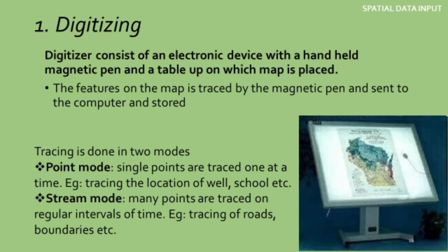Digitizing is done using a digitizer — an instrument consisting of an electronic device with a hand-held magnetic pen and a table on which the map is placed. You place the map on the table and trace the boundary with your magnetic pen. If you are entering the Indian map, you trace the Indian boundary with the magnetic pen and a digital map of India appears in your GIS software. Tracing is done in two modes: point mode, for pointing out specific locations like a well or a school, and stream mode, for drawing actual lines or boundaries.